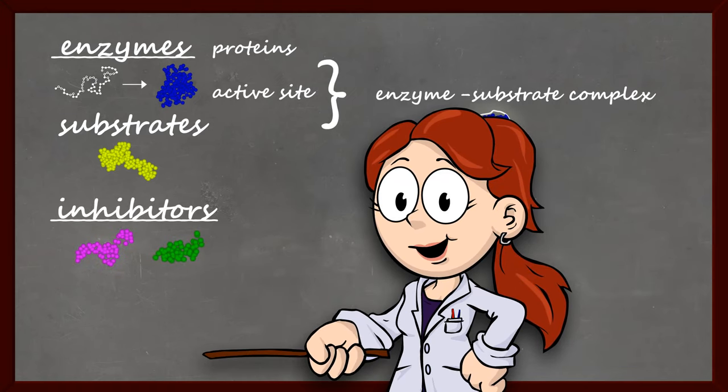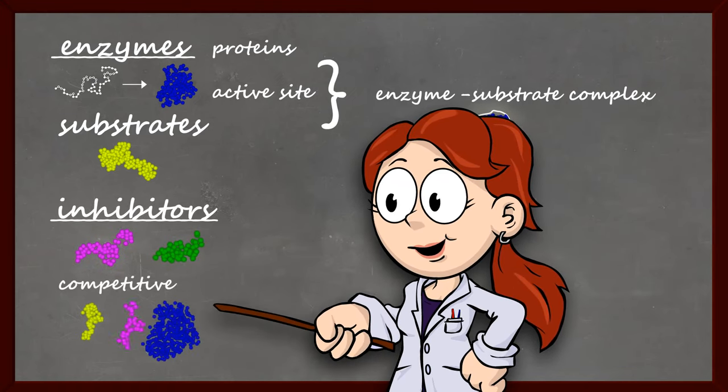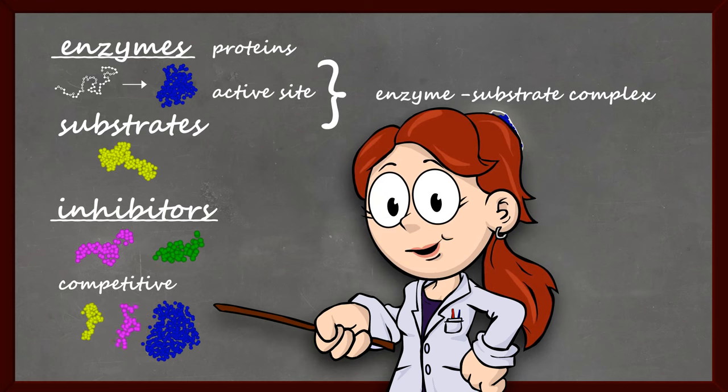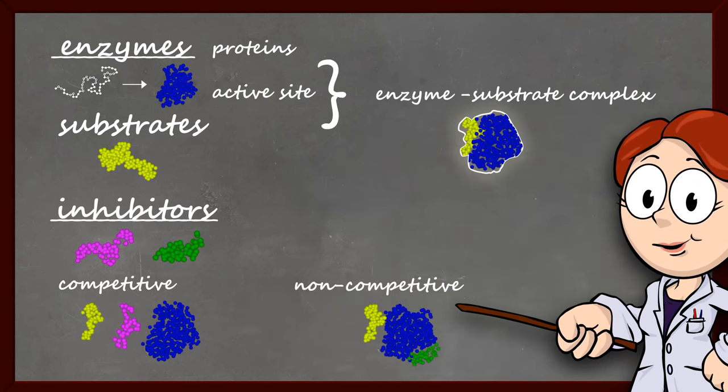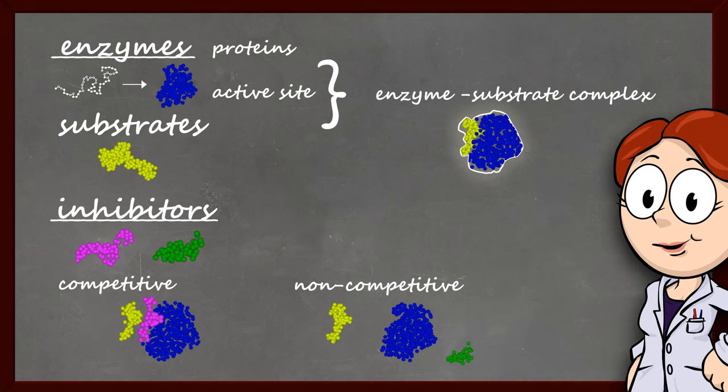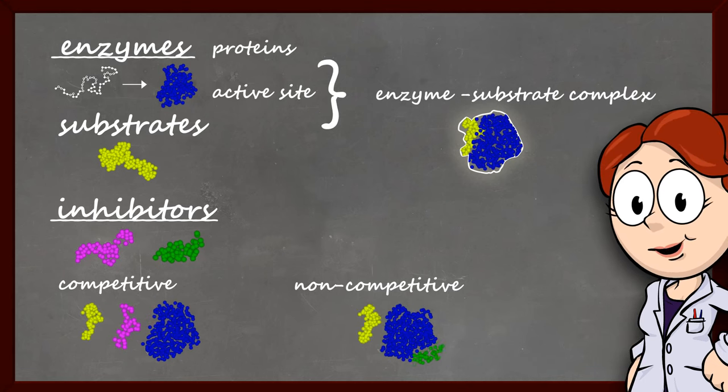This inhibition falls into two broad categories. Competitive inhibition, where the inhibitor competes with the substrate for binding to the active site. And non-competitive inhibition, where the inhibitor blocks enzyme function by binding at a site other than the active site.